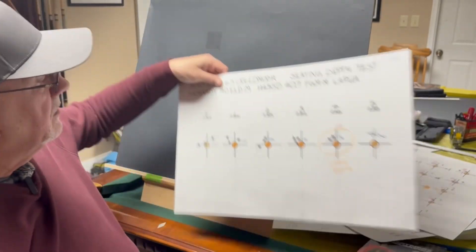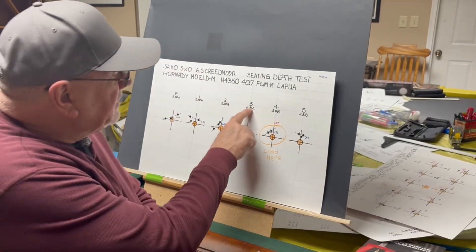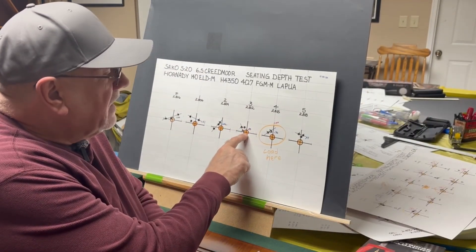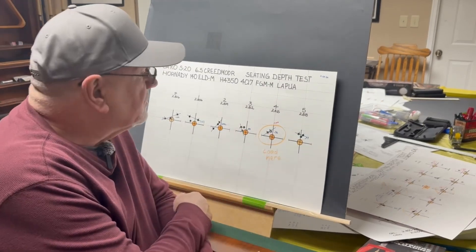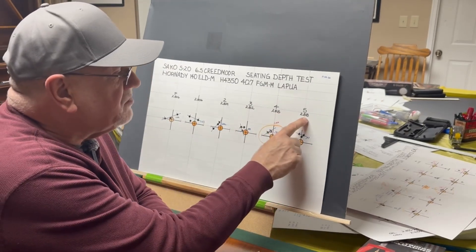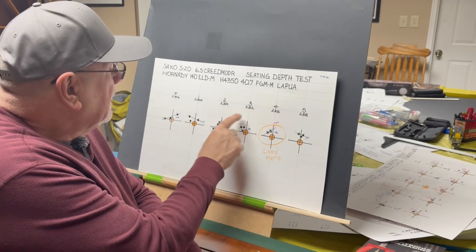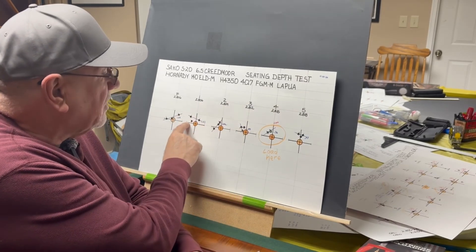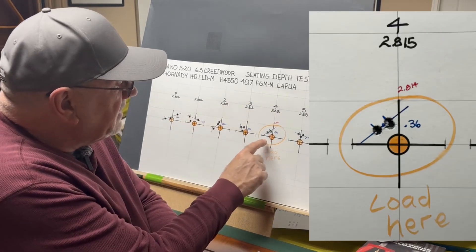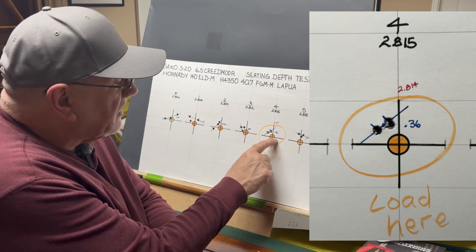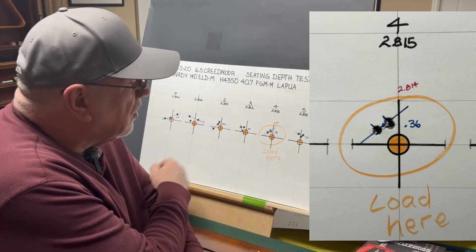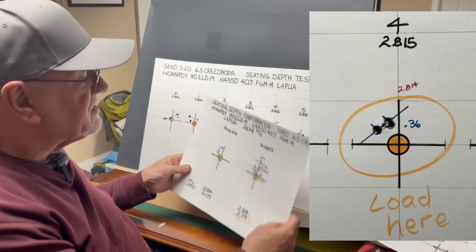I went back and I loaded that at 2.812 and then I went 3 thousandths on either side of that to 2.815, 2.818 more and then on the less I went 2.809, 2.806 and the group that I found that shot the best was right here at 2.815.